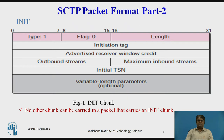Advertised Receiver Window Credit: This 32-bit field is used in flow control and defines the initial amount of data in bytes that the sender of the init chunk can allow. It is the receiver window value that will be used by the receiver to know how much data to send.